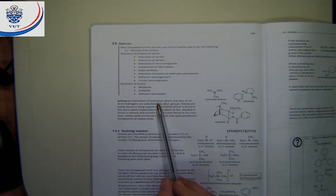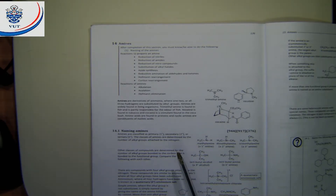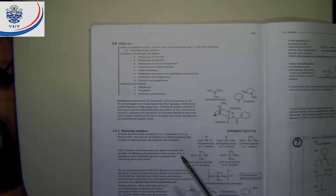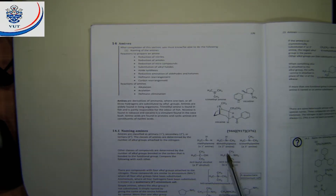Amines are derived from ammonia — the name clearly indicates that to us. Amines are found widely in living organisms. For example, trimethylamine is found in fish and is responsible for the odor of fish. So you can imagine amines do not always have such a very pleasant odor.